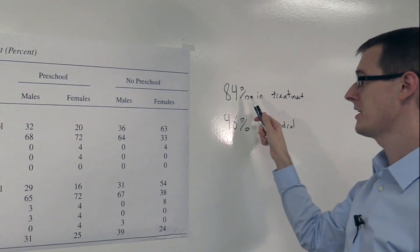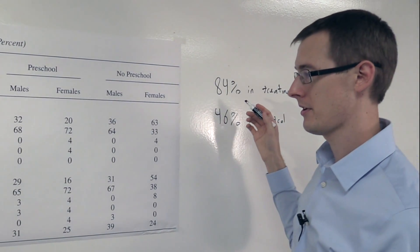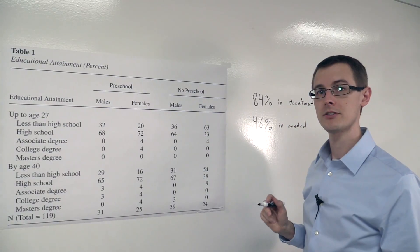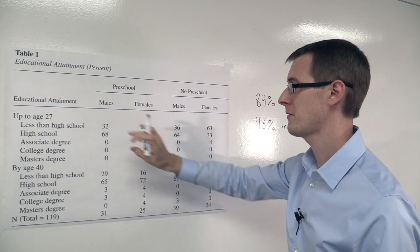So that's a pretty big difference. It looks like for females, getting preschool almost doubled the percentage of students who had at least a high school education. So that looks really good, very good effect of preschool. Now let's look at the effect for males.